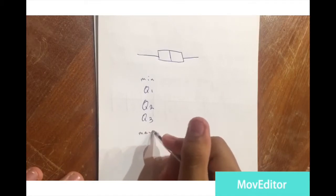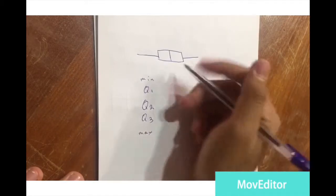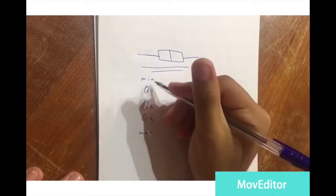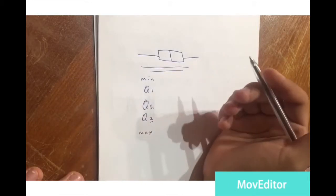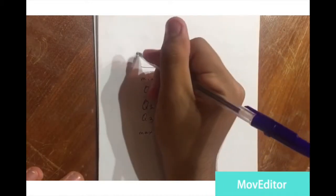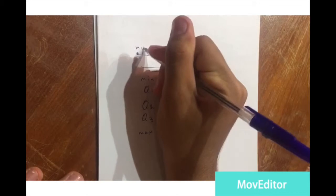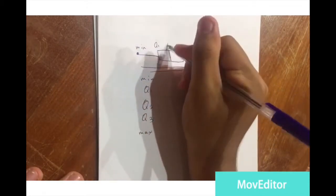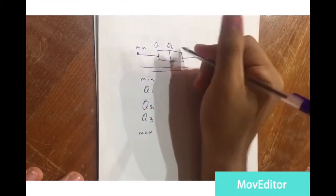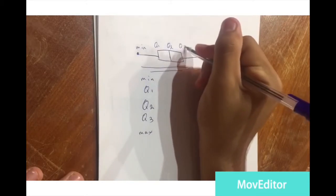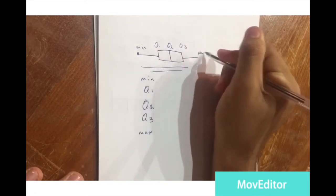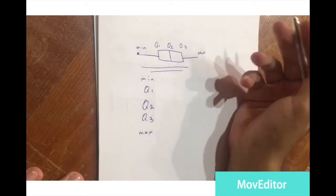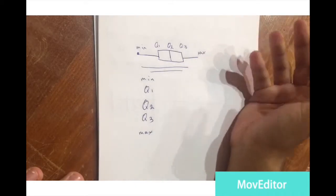And then the maximum. All five of these things are present in the box-whisker plot. The minimum is always on the far left, then Q1, then Q2 (the median) in the middle, then Q3, and the maximum on the far right.